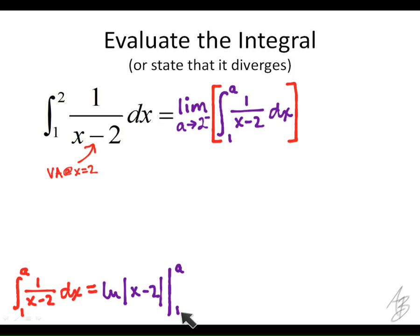Now, this number right here, 1 is clearly less than 2, but a is also going to be less than 2. Does everybody understand why a has to be less than 2? Because we're approaching from the left. So since 1 and a are both less than 2, then what can I do with this absolute value here?